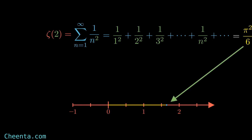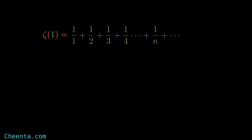You might say it's obvious this converges because we keep adding smaller and smaller terms, but is that always true? Let's take Zeta of 1, which gives the harmonic series. As you can see, we are adding smaller and smaller terms, so you might expect convergence — but sadly this one actually diverges towards infinity. So the Zeta function only converges for x greater than 1.